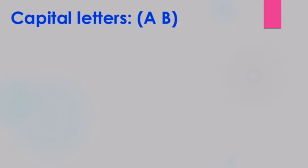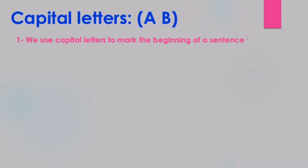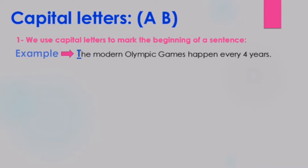Capital letters. We use capital letters to mark the beginning of a sentence — الأحرف الكبيرة نستخدمها لتحديد بداية الجملة. Here we have an example: 'The modern Olympic Games happen every four years.' The sentence begins with the capital letter T, because we began the sentence with it.